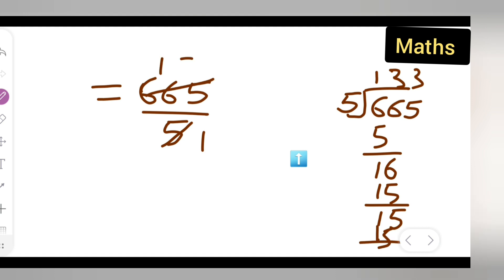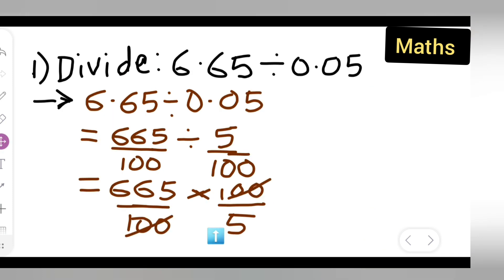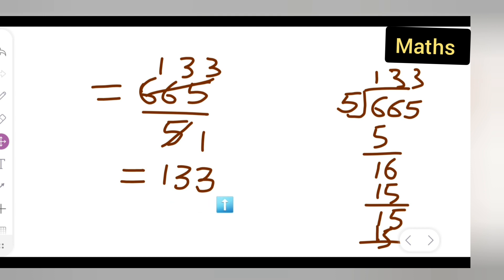So the answer is 133. So I hope you have understood how to divide a given number with a decimal point. 6.65 divided by 0.05, your answer is equal to 133. So I hope you have understood and thanks for watching.